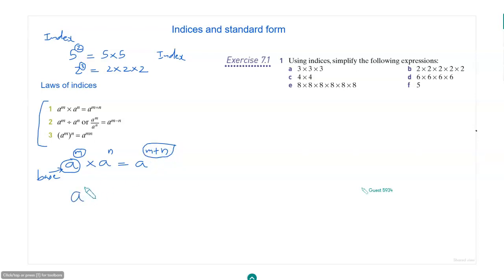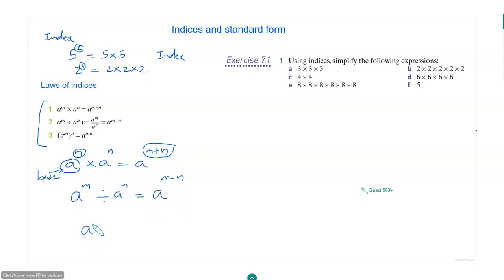When you divide two numbers having the same base — for example, a to the power m divided by a to the power n — this will be a to the power m minus n. So for multiplication it is plus, for division it is minus. The third law is: a to the power m, whole raised to n, equals a raised to m times n.